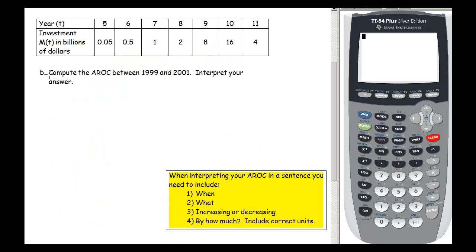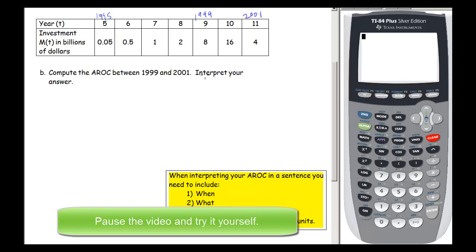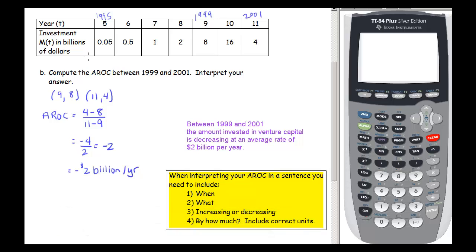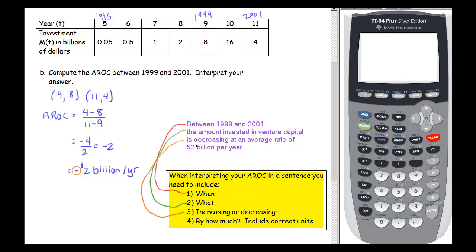Now compute the average rate of change between 1999 and 2001. Writing down the two ordered pairs and using the slope formula, the result is negative — so when writing the sentence, we say 'decreasing' instead of 'increasing,' and the rate is negative two billion dollars per year. Between 1999 and 2001, the amount invested in venture capital is decreasing at an average rate of two billion dollars per year. Using the word 'decreasing' takes care of the negative sign, so we don't need it in the 'by how much' part.